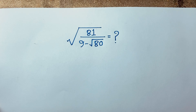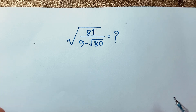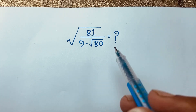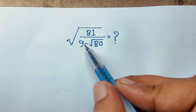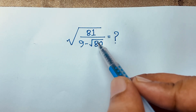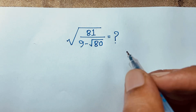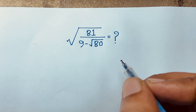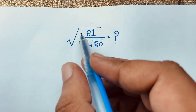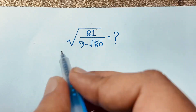Hello everyone. In this video we have solved a nice radical math question: square root of 81 over 9 minus square root 80 is equal to what. How to simplify this math question?